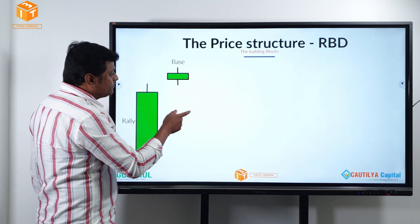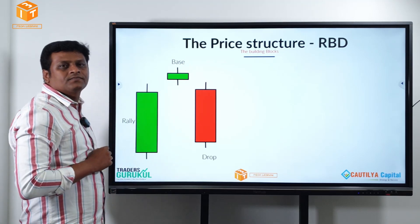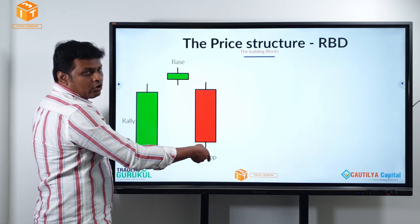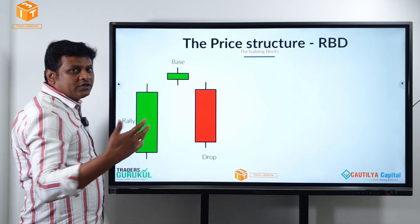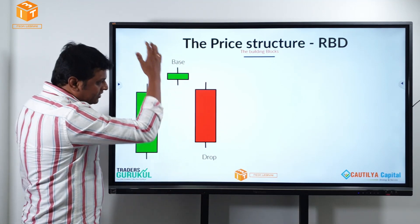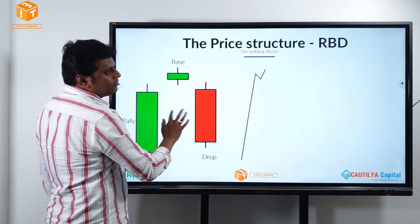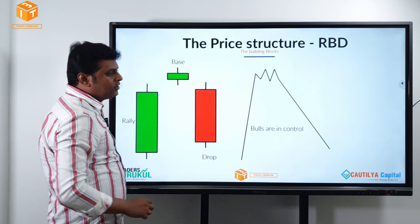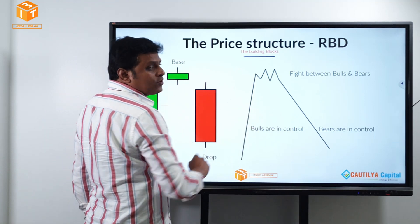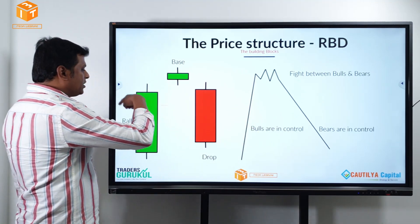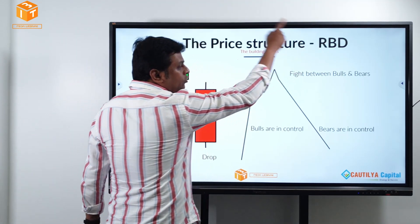And finally, what happened? There is a massive fall — it is a drop. Rally, base, and drop. The scenario is a reversal scenario. The structure is bearish because at the end the price is bearish. The bulls were in control, there is a fight, and finally the bears took over the control from the bulls. And hence we call this structure the Rally Base Drop structure.